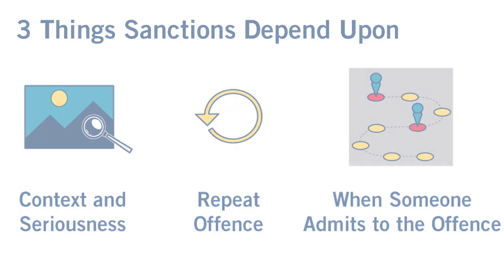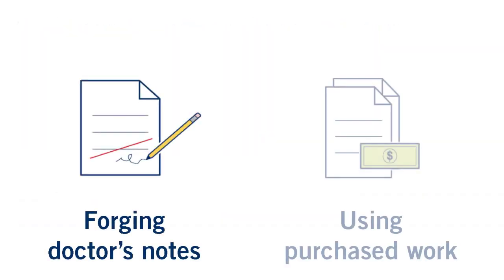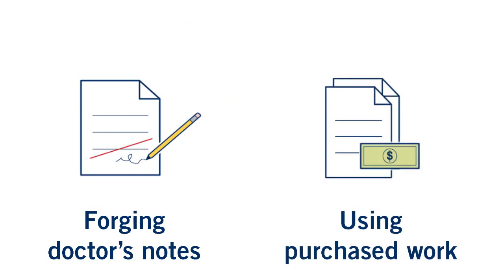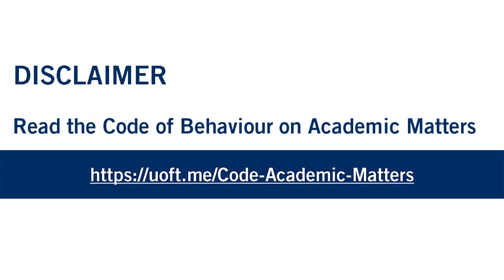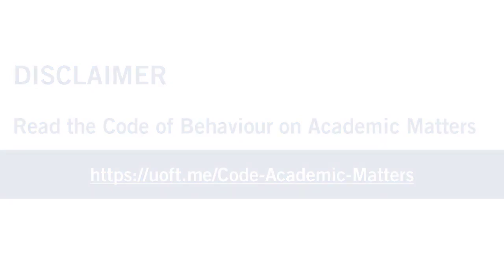For instance, forging doctor's notes and using purchased work are examples of very severe offenses. Let's walk through the process to highlight what happens at each of its parts and what the sanctions can be. Please note that the Code of Behavior on Academic Matters supersedes any information in this video. Refer to the code for full details.